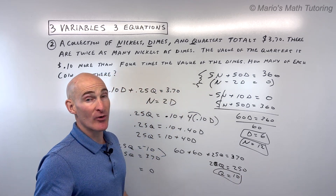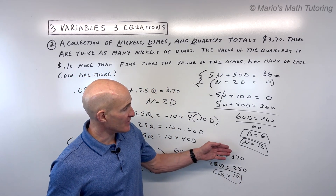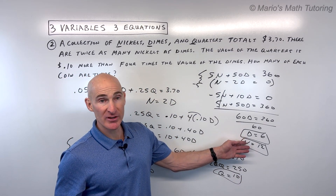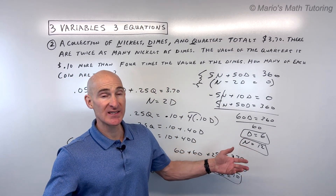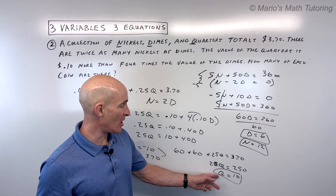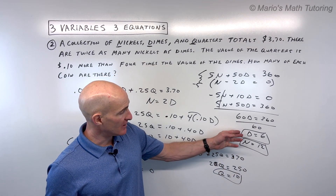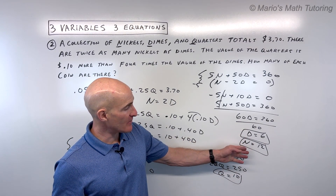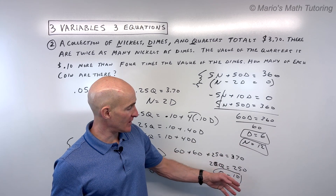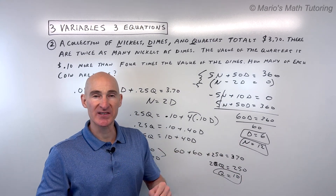To find the number of quarters, plug into 5n plus 10d plus 25q equals 370: 5 times 12 is 60, plus 10 times 6 is 60, so 120 plus 25q equals 370. Subtracting 120 gives 25q equals 250, so q equals 10 quarters. The final answer: 6 dimes, 12 nickels, and 10 quarters. Write it as a sentence so your answer is clear.